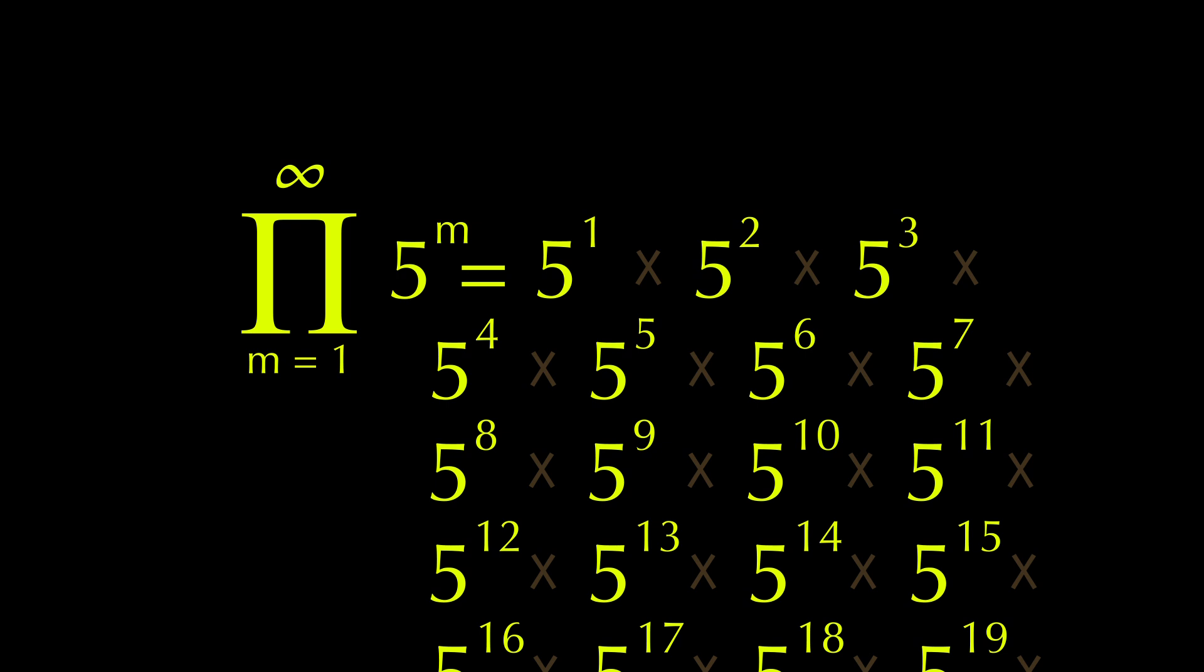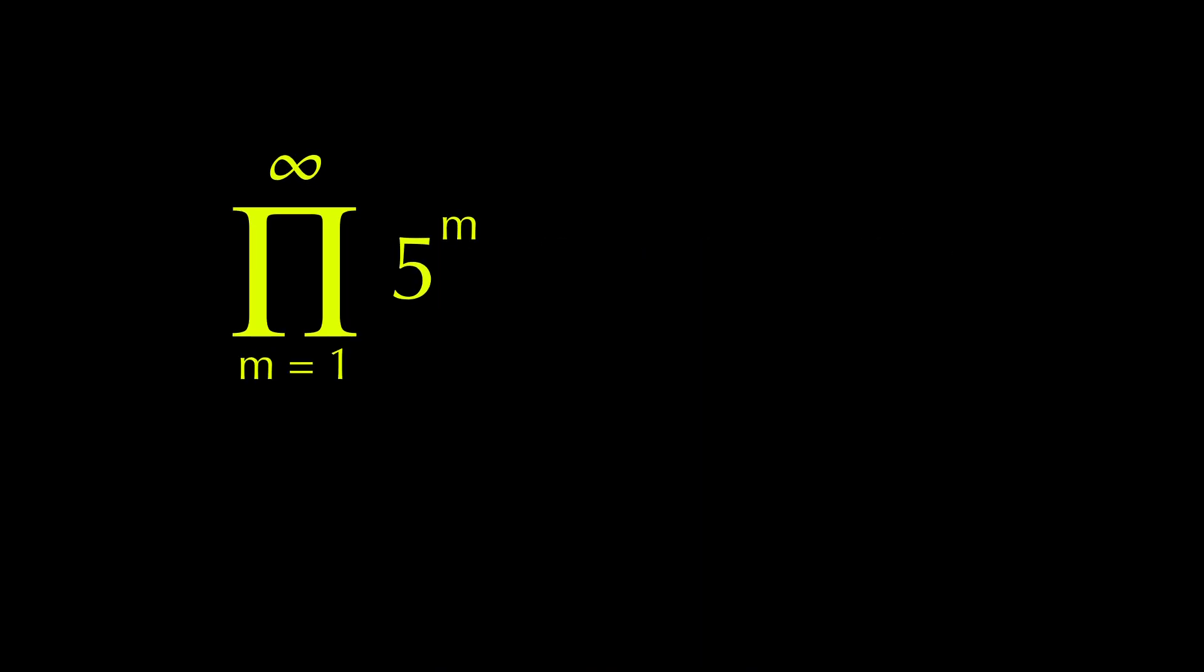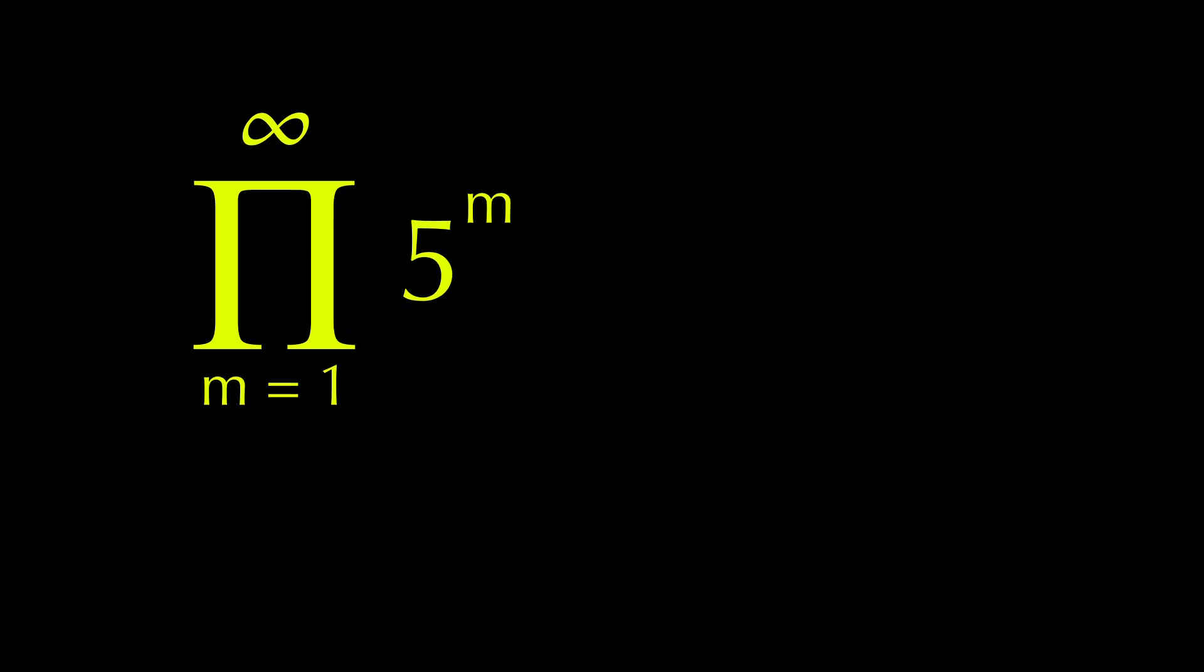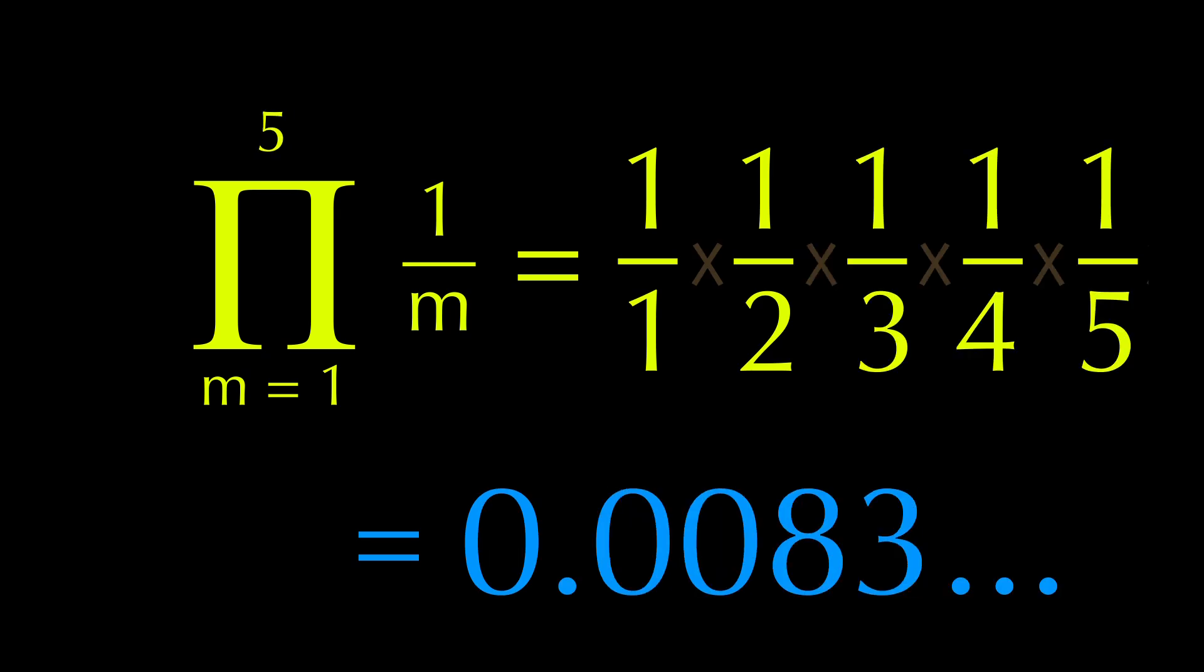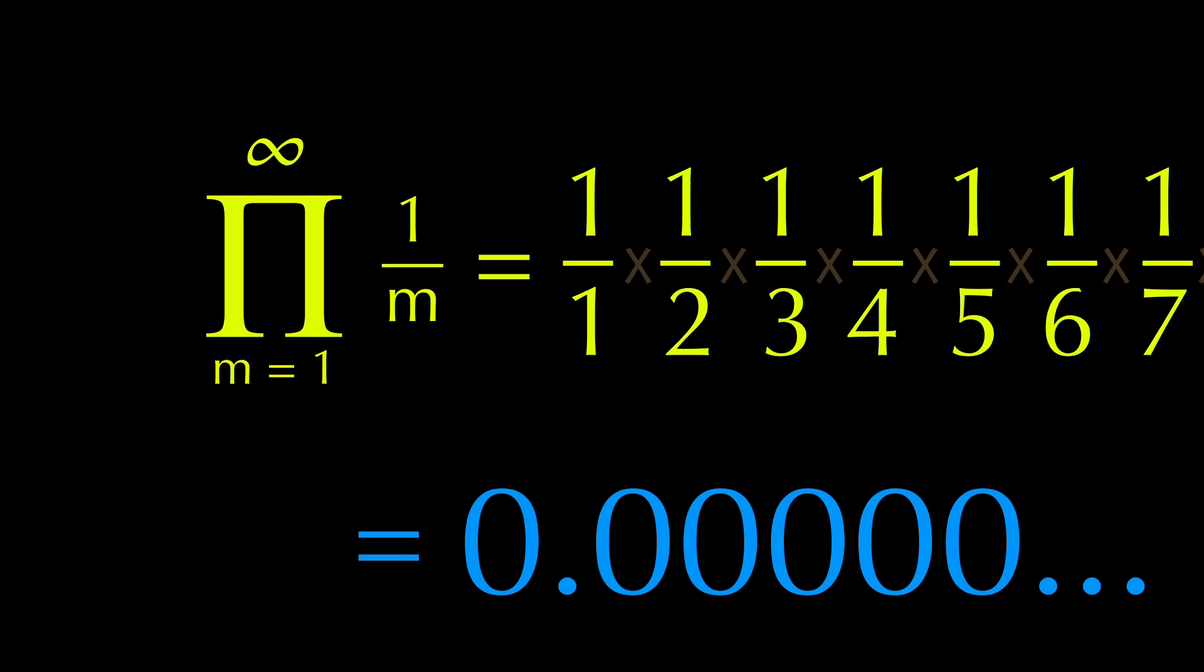Infinity. A more interesting situation occurs when we have numbers less than 1, like so. As we increase the upper bound, our fraction becomes ever so smaller. Taking it to infinity, the limit becomes 0.